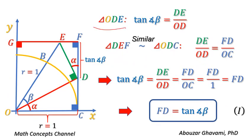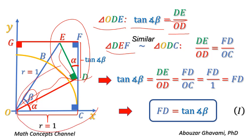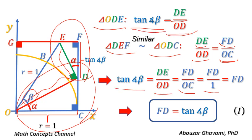In right triangle ODE, tangent of angle beta equals the length of front side DE divided by the length of adjacent side OD. We showed that two right triangles DEF and ODC are similar, so their corresponding sides are in proportion: DE divided by OD equals FD divided by OC. Since the length of side OC equals the radius of the unit circle, equal to 1, we have tangent of angle beta equals FD divided by 1, which equals FD. Therefore, FD equals tangent of angle beta.